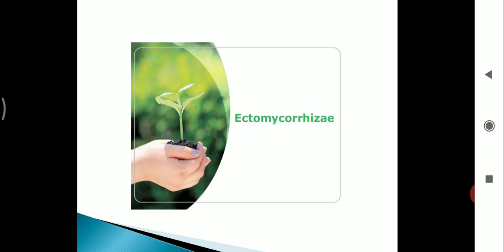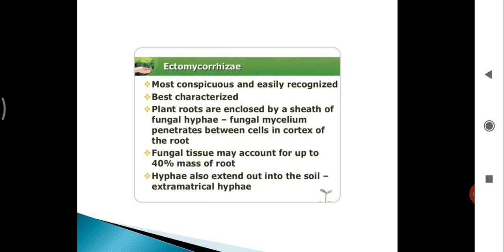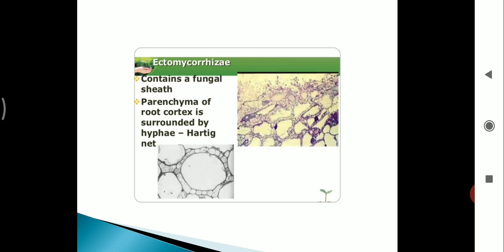Next we are going to ectomycorrhizae. Ectomycorrhizae means most conspicuous and expressly recognized. Plant roots are enclosed by a sheath of fungal hyphae. Fungal mycelium penetrates between cells in cortex of the root. Fungal tissue may account for up to 40% mass of root. Hyphae also extend out into the soil as extramatrical hyphae. Ectomycorrhizae contain a fungal sheath where parenchyma of root cortex is surrounded by hyphae that is called a hartig net.